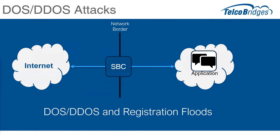You've got some application on the right. This could be in a hosted environment or an enterprise environment — Asterisk, or it could be a big call server, or it could be Broadsoft — any one of the applications. To the left, you usually have to expose to the internet because you want to be able to have people connect from home and remote offices.